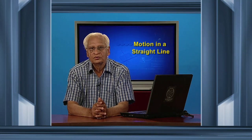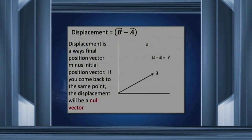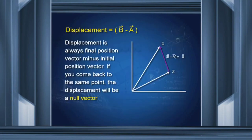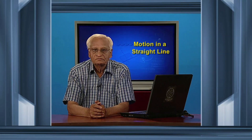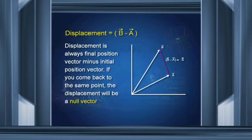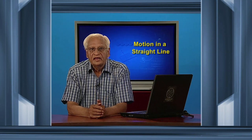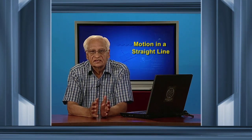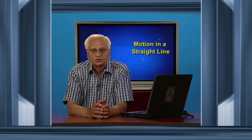Here is how we get the displacement. The initial position vector, the final position vector, and the displacement vector is B minus A. We denote displacement by capital S with an arrow on it, whereas distance covered is denoted by small s. Average speed is defined as the total distance covered divided by the total time taken.